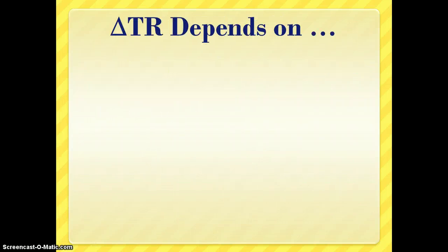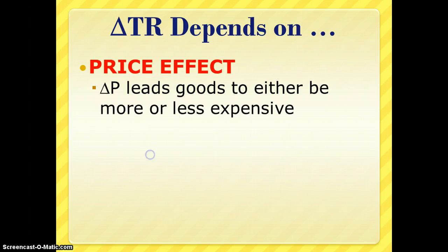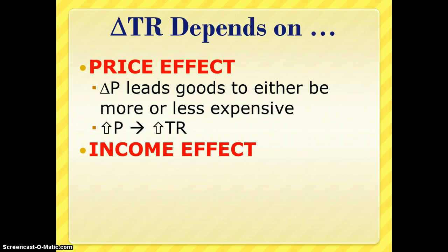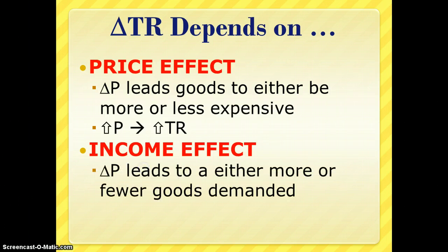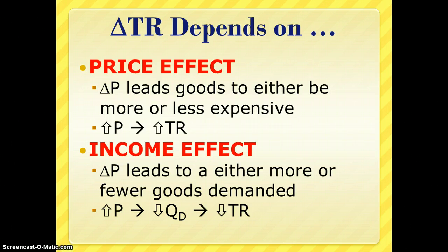A change in price drives a change in total revenue depending on two different effects. One is the price effect: a rise in price would presumably have a positive effect on total revenue since you're bringing in more per unit. But there's also the quantity effect: a rise in price makes goods relatively more expensive, so you'll purchase fewer of them, which generally leads to a negative effect on total revenue. The question is which of these two effects outweighs the other — and elasticity has something to say about that.